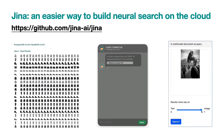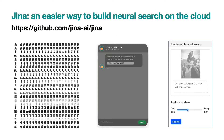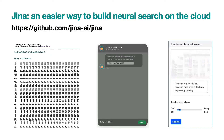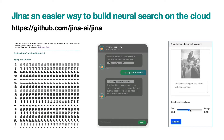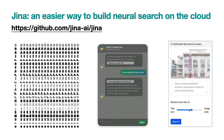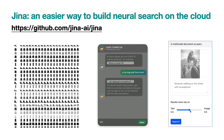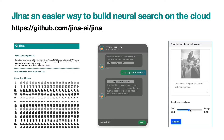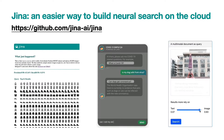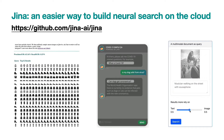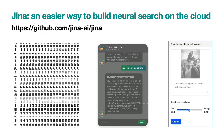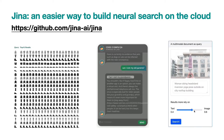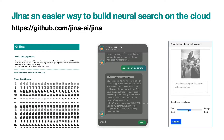GINA is an easier way to develop neural search on the cloud. I often call it TensorFlow for search. If you haven't tried GINA before, you can install GINA via PyPI and run GINA Hello demos to see examples on fashion image search, chatbot, and multi-modality search.